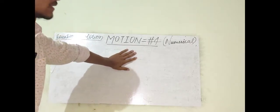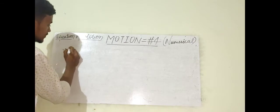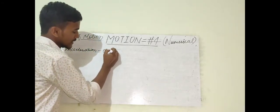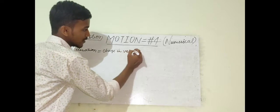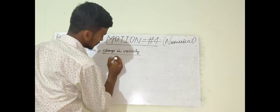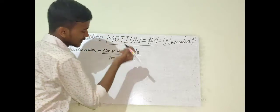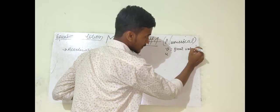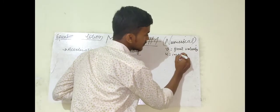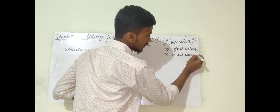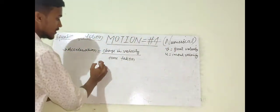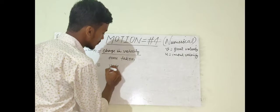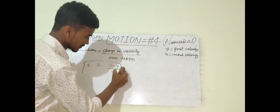Before starting this video, let's revisit lecture number three, which was on acceleration. Acceleration is actually the change in velocity. To find the change in velocity, you need to know two terms: V, which is called final velocity, and U, which is initial velocity. So acceleration A = (V - U) / T.